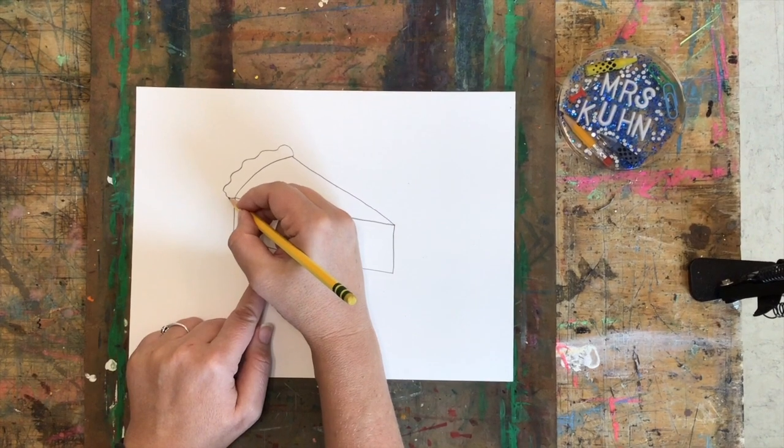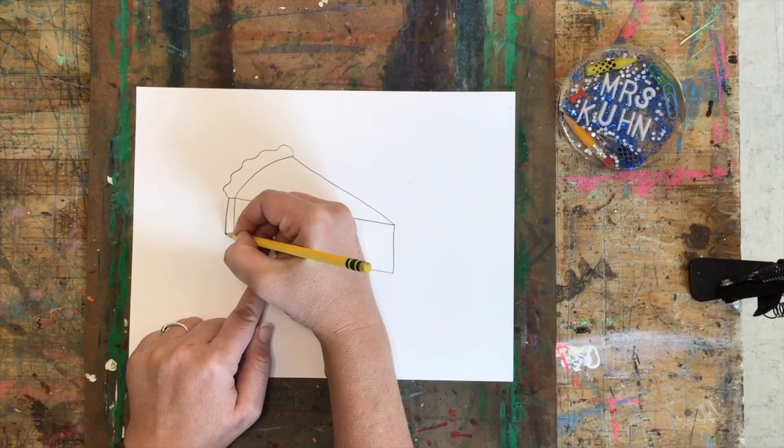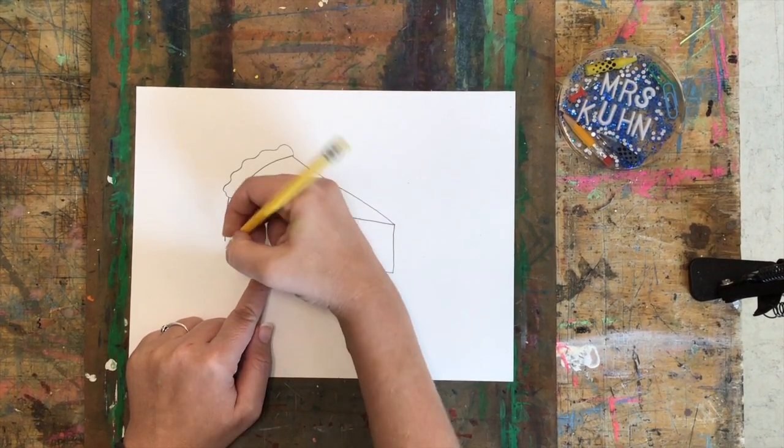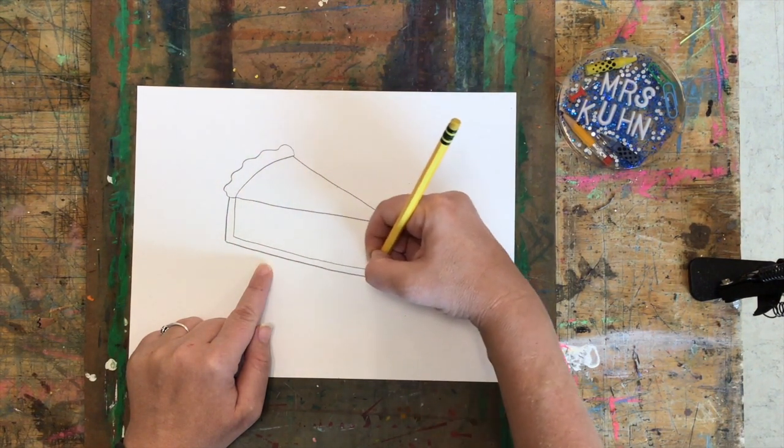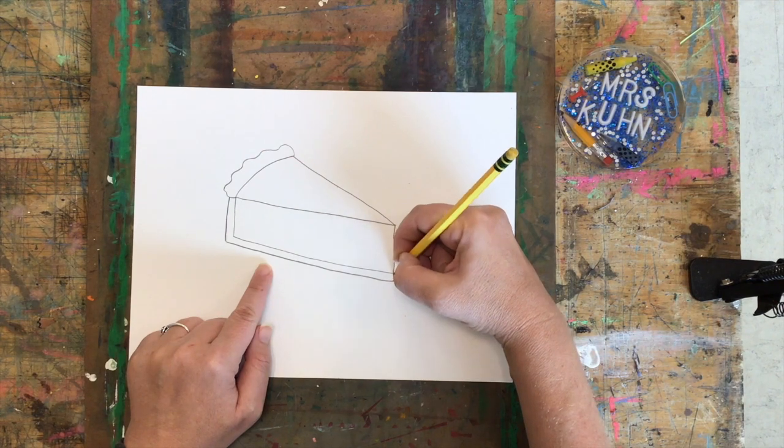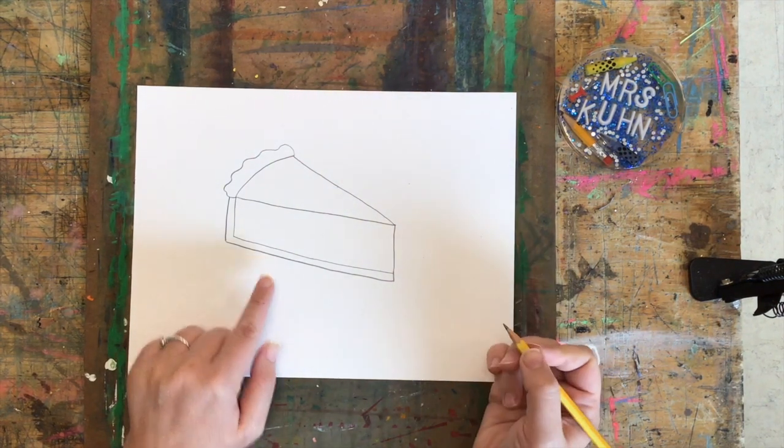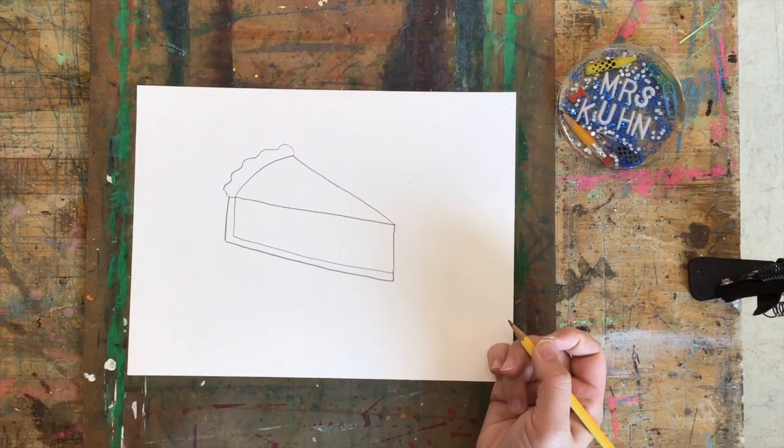My pie crust is going to be kind of ruffled or have a rough edge. So I'm going to wiggle and then connect. And then I'll draw a parallel line that comes straight down. It's going to turn and stay parallel to the diagonal line. It's the crust. And then come back up. So I have a 3D slice of pie.